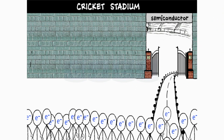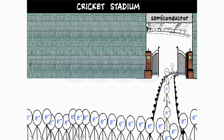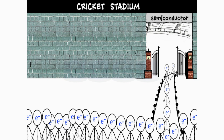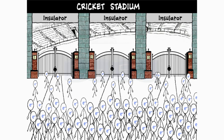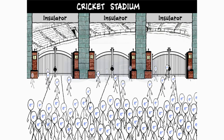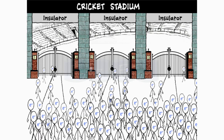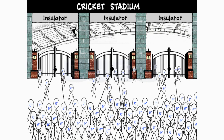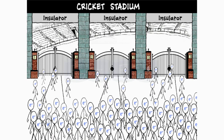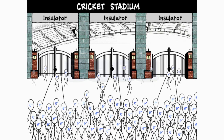However, here we see the crowd of people moving past the entrance one by one slowly in a queue. That's because the current in a semiconductor passes through it partially but continuously. In the case of insulators that are bad conductors of electricity, we can see the stadium entrance, which we have assumed to be an insulator, is blocked, thus not allowing the crowd of people — assumed to be current — to pass through it.